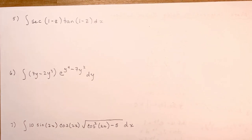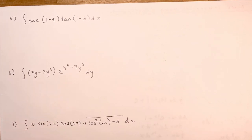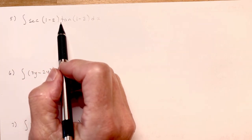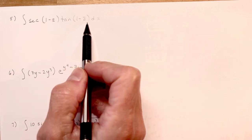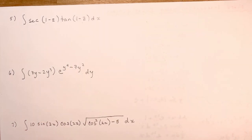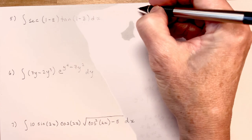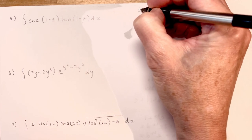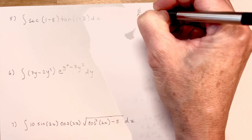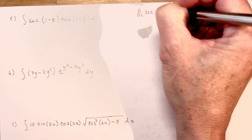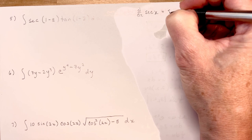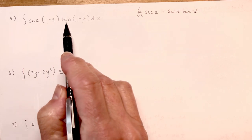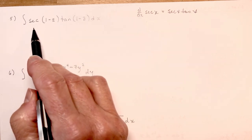Now something a little bit different. What's the integral of secant of 1 minus z, times tan of 1 minus z, dz? Right away you should think back into your derivatives — what was the derivative of secant x? You might recall that it's secant x tan x. So this integrand is just the derivative of secant of x.